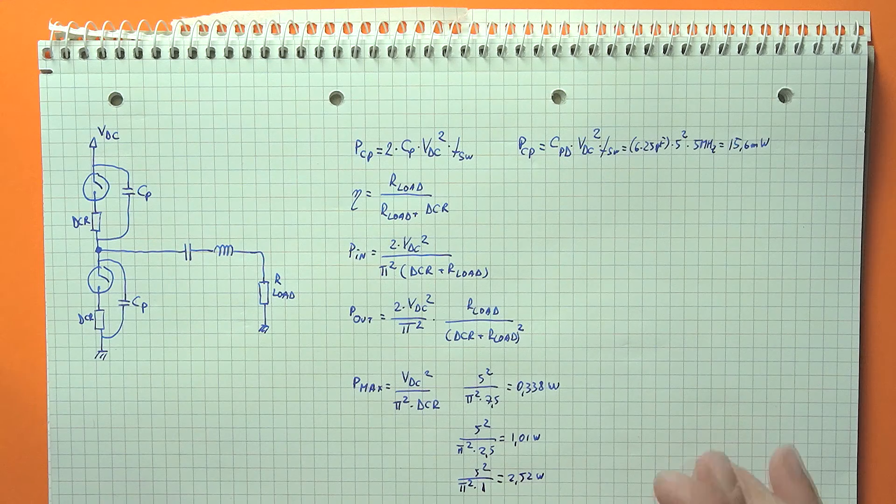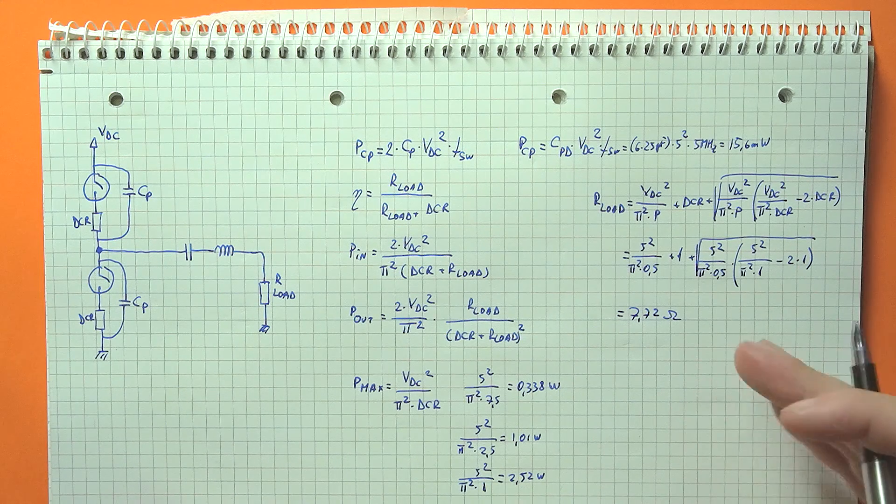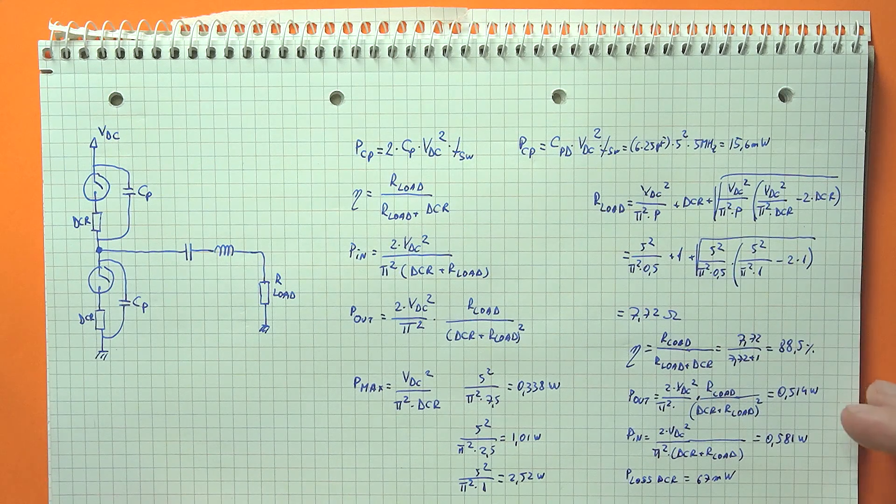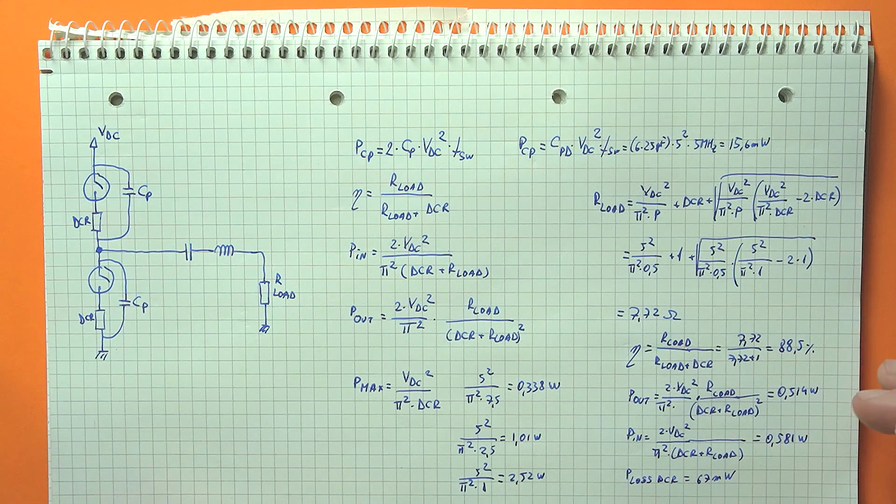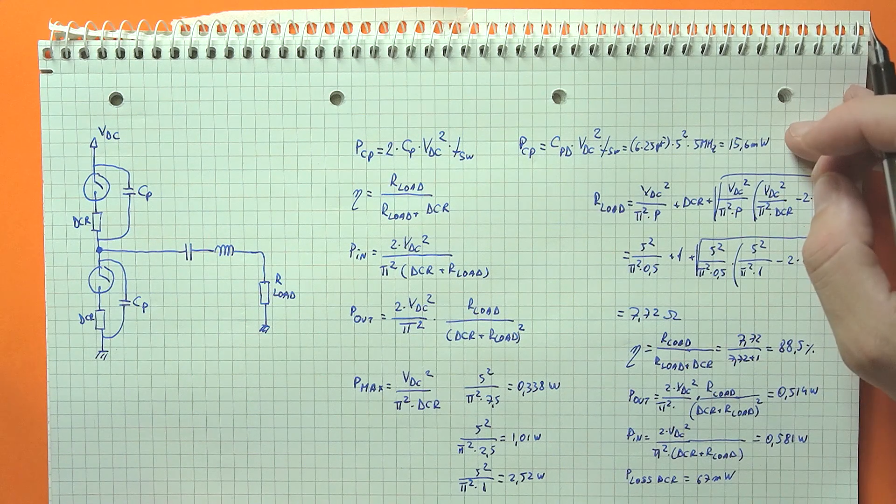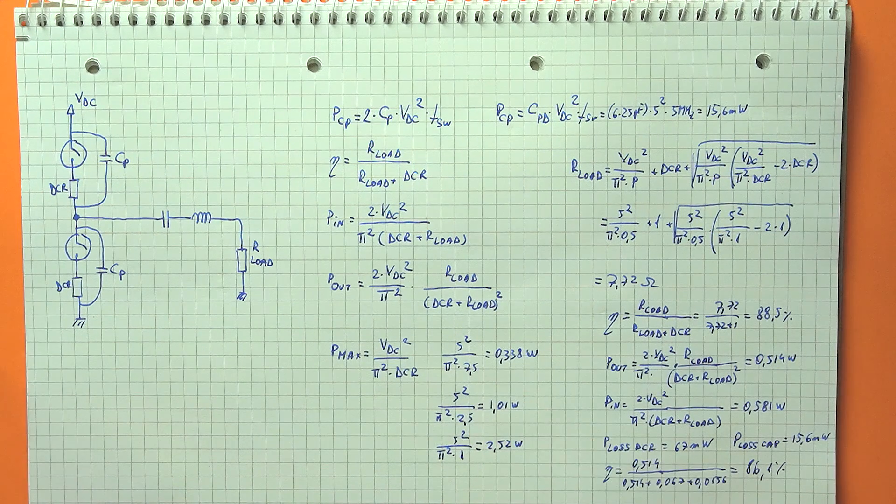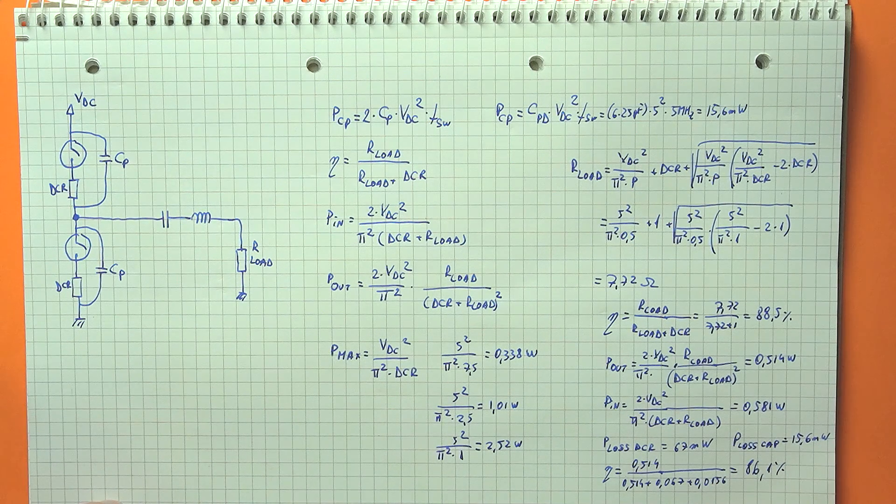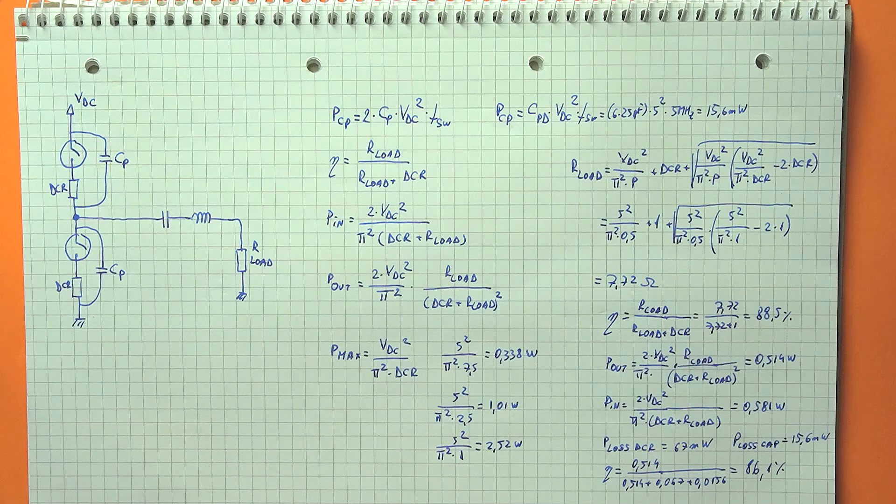To finish our expected efficiency calculations, we need to work out the output load into which we can drive the half watt. So if I've done everything correctly, we need an output load of 7.72 ohms. So with this value, if we ignore any other losses, we should be getting an output power of 514 milliwatts with an input power of 581 milliwatts, giving us an efficiency of 88.5%. So we are getting 67 milliwatts from the resistance. Now if we also consider our 15.6 milliwatts from the capacitive losses, our grand final efficiency ends up being 86%. So for this particular implementation with the output stage that we've chosen, the major part of the losses ends up being the series resistance and not the parallel capacitance.